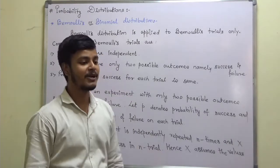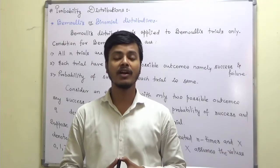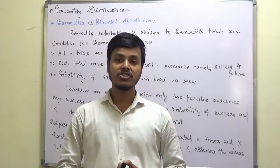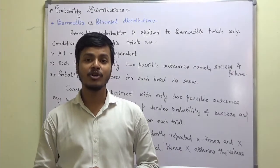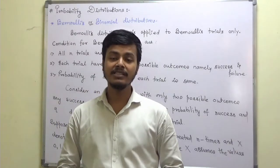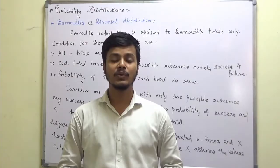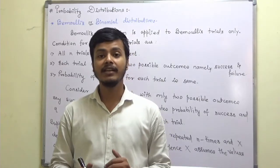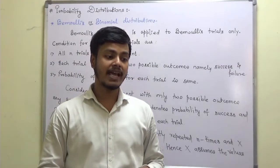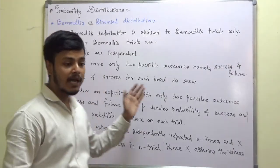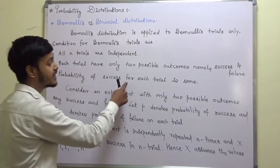Bernoulli's distribution is applied for Bernoulli's trials, and the conditions for Bernoulli's trials are only three. The first condition is all trials must be independent — whether you are doing 10 trials or 20 or 10 million, all trials should be independent. The second condition is each trial has only two outcomes, namely success and failure. The third condition is the probability for each trial is the same — like if the probability of success is 1/2, then the probability of failure will also be 1/2.